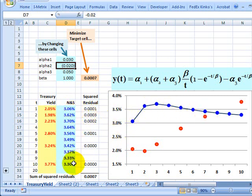And so it is determined by alpha one, alpha two, alpha three, and beta, the four parameters that I arbitrarily plugged in. And it's not a good fit.